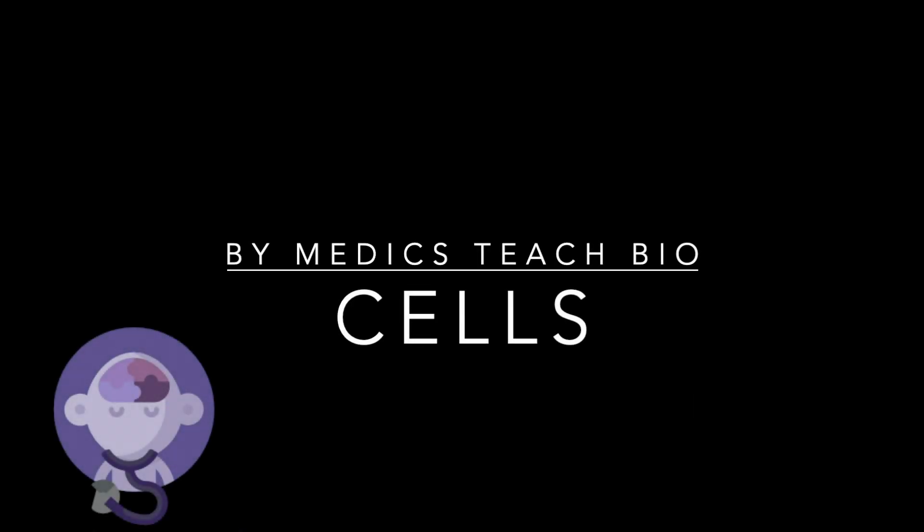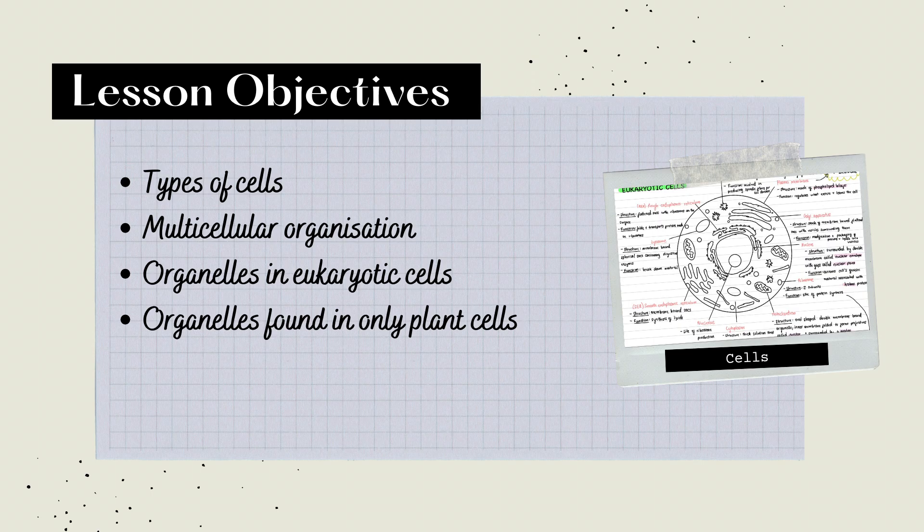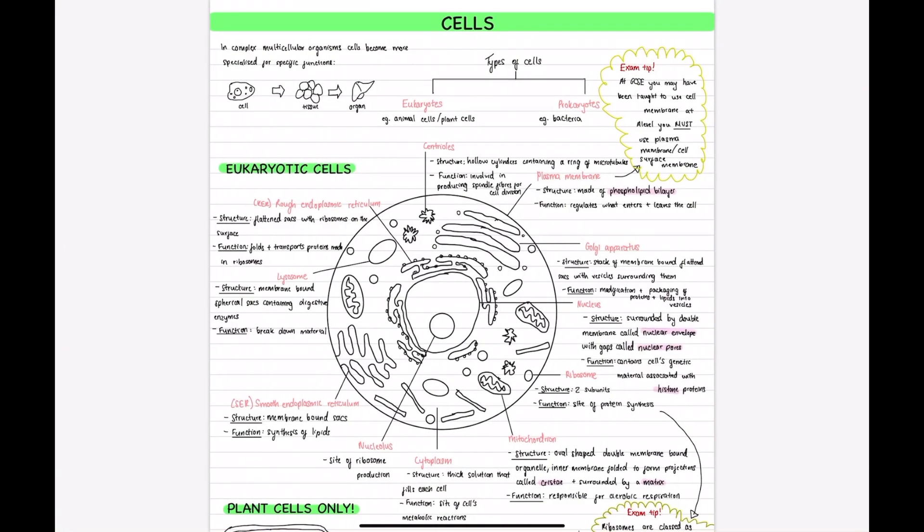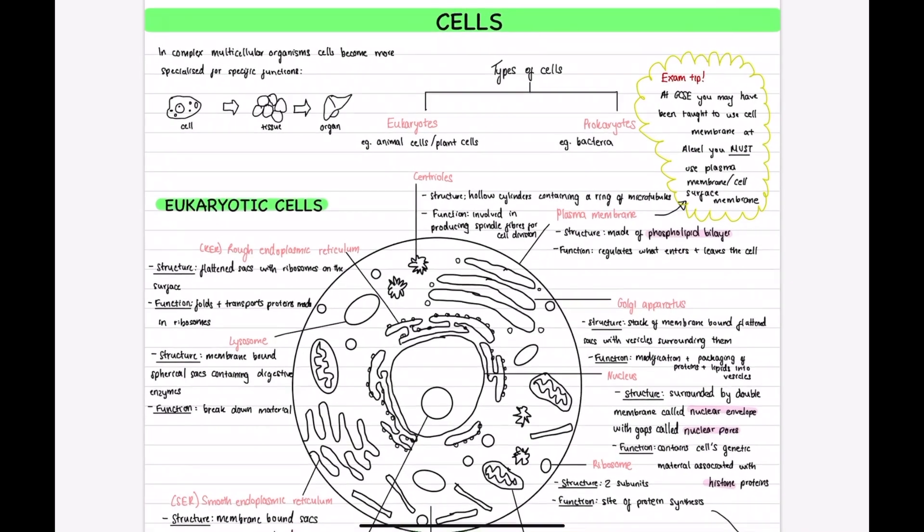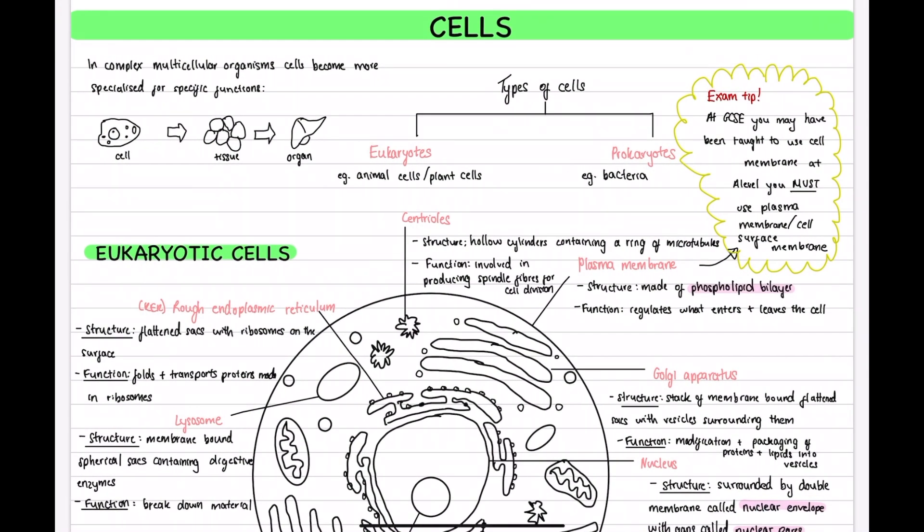Welcome back to a biology A level video. In this video we will be talking about cells. First thing you need to know about is that there are two types of cells, eukaryotes and prokaryotes. In this video we will be focusing on eukaryotic cells which includes animal and plant cells.